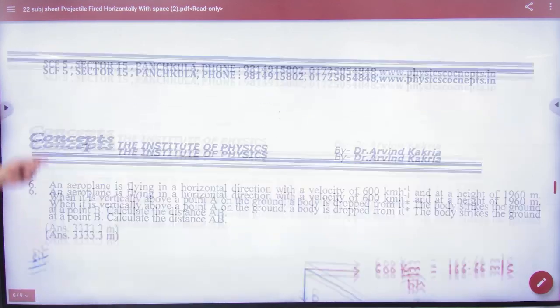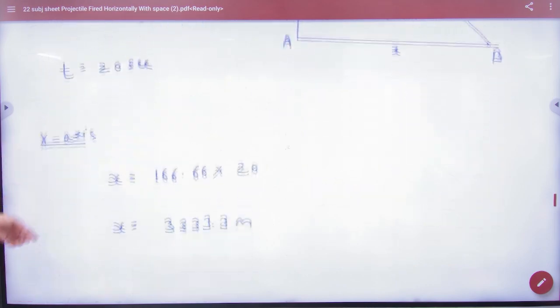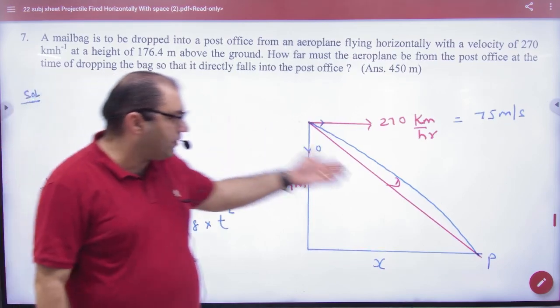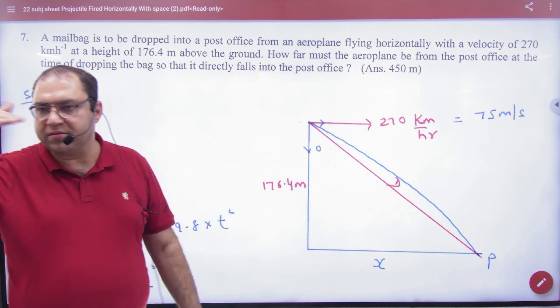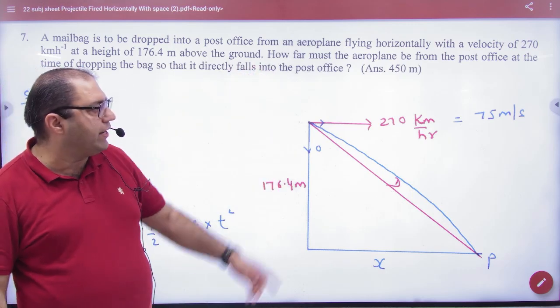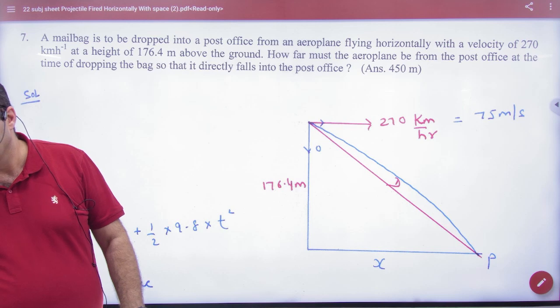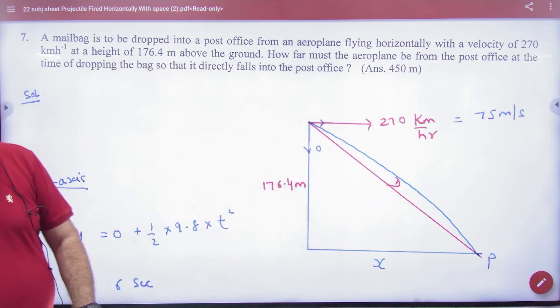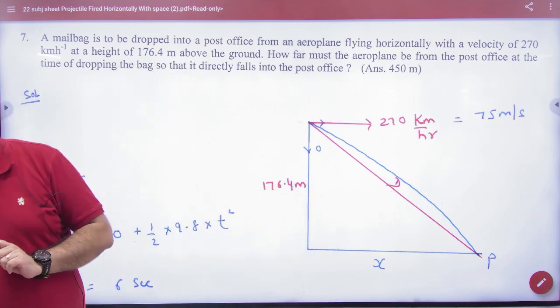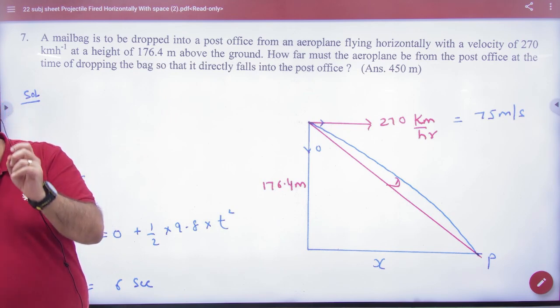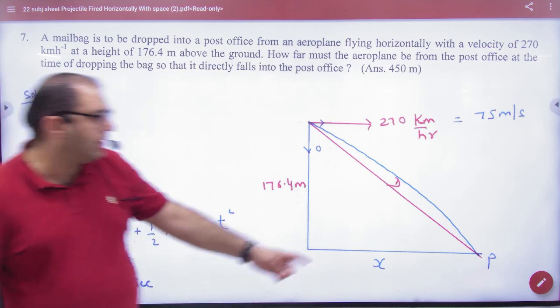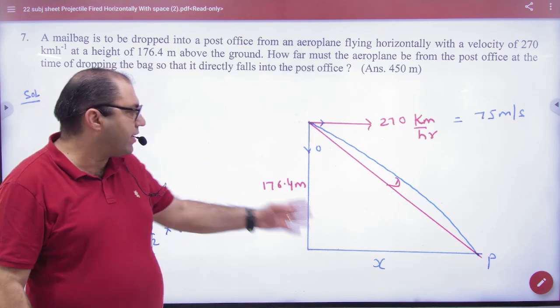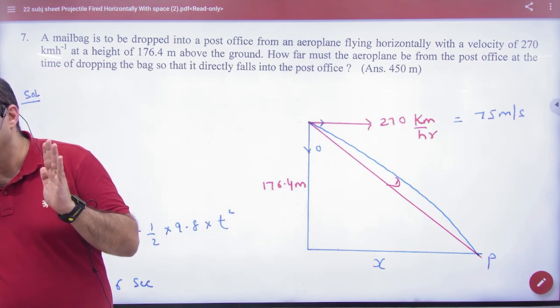Question number next 6 and 7. Mail bag is to be dropped in a post office, this is a post office. So where do you have to get the mail bag from an aeroplane. The aeroplane speed is 270 km per hour means 75 meter per second, and dropped, then the initial vertical velocity is 0 and 176.4 meter is dropped. So you need to get here. So you will know what is the distance of post office. What is the distance of post office? Here is a confusion.